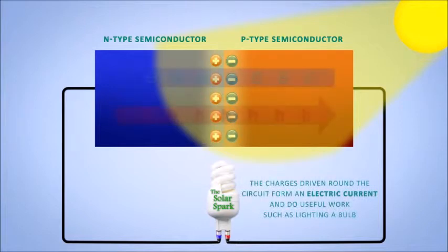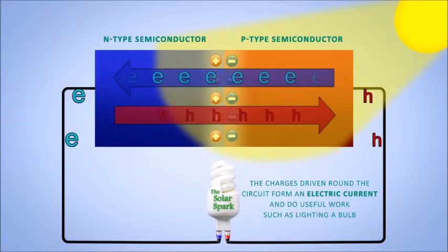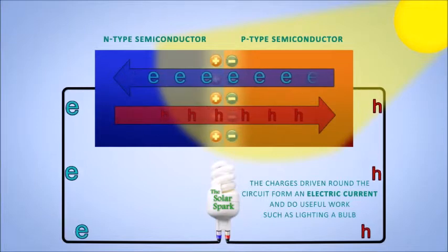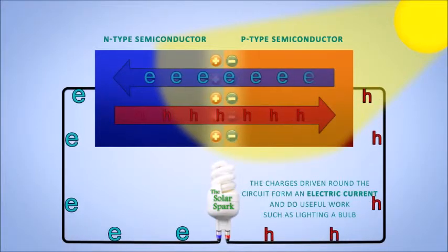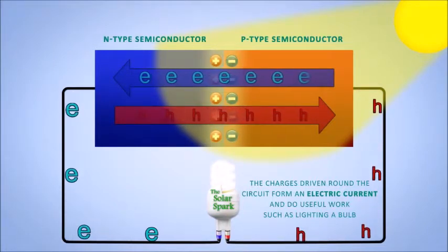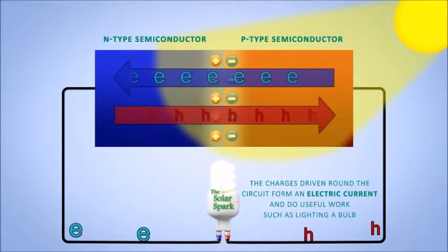The area around the junction is then referred to as a depletion zone due to the lack of charge carriers while the separation of charges creates an electric field. When light is absorbed by the semiconductor it creates a free electron and a corresponding hole. The electric field then causes them to flow in opposite directions with the electron going in the n direction. The resulting flow of electrons and positively charged holes creates a voltage.